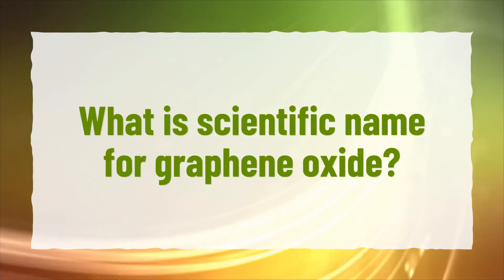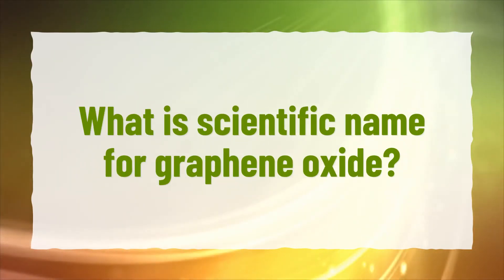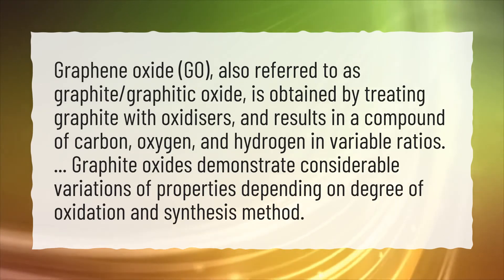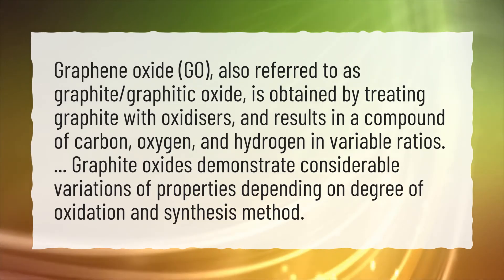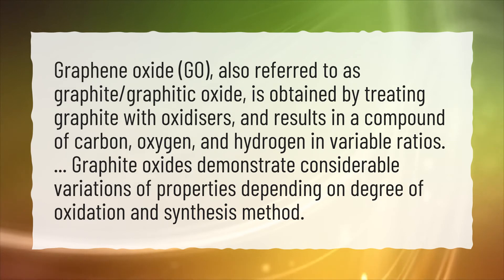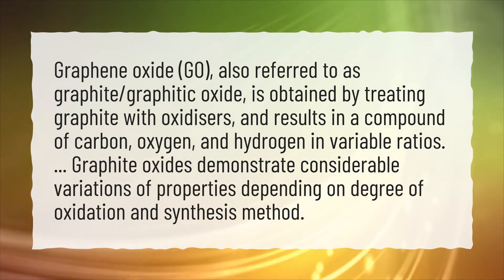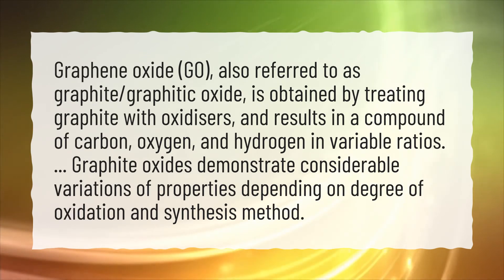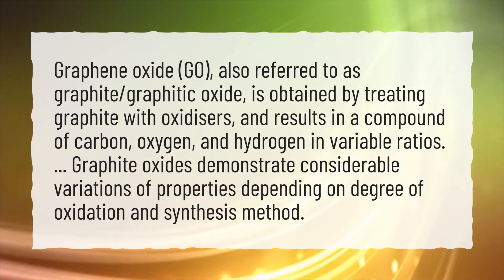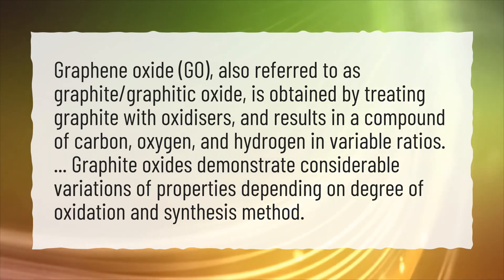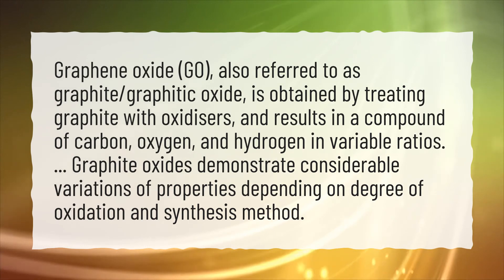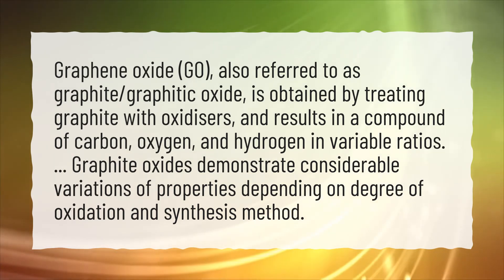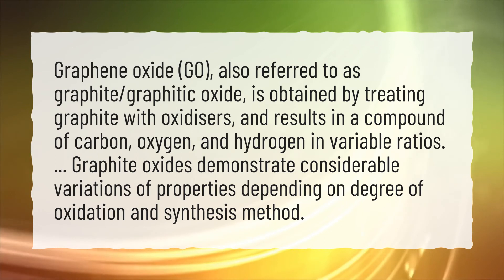What is the scientific name for graphene oxide? Graphene oxide (GO) is also referred to as graphitic oxide, obtained by treating graphite with oxidizers, resulting in a compound of carbon, oxygen, and hydrogen in variable ratios. Graphite oxides demonstrate considerable variations of properties depending on degree of oxidation and synthesis method.